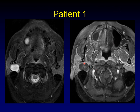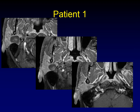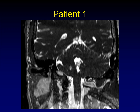Patient 1 has a heterogeneous enhancement pattern with ill-defined enhancement centrally. On these sequential images, you can really see the relationship of the lesion to the stylomastoid foramen. You can see the lesion start to knuckle in here, and here it is completely filling the stylomastoid foramen, and now you can see its effect on the vertical segment of the facial nerve. This is a steady-state free precession sequence in a coronal oblique view, and again, you can see the relationship of the mass to the stylomastoid foramen and vertical segment of the facial nerve.